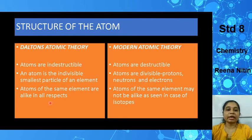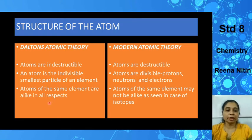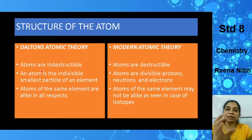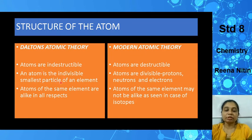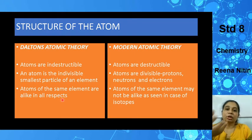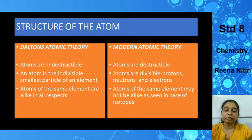We will begin with Dalton's atomic theory versus the modern atomic theory. What did Dalton postulate? He postulated that atoms are indestructible — you cannot divide an atom. He said the atom is the ultimate, smallest particle of an element. He also said atoms of the same element are alike in all respects, meaning if you take one atom of hydrogen and another atom of hydrogen they have to be the same. But that's not the case, as found out by modern atomic theory.